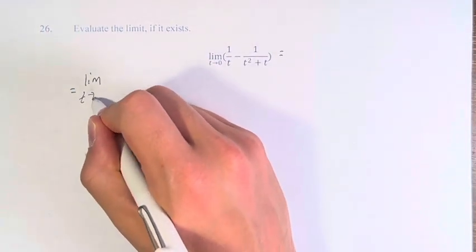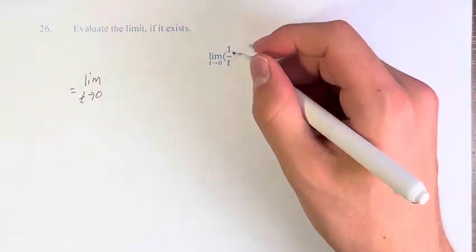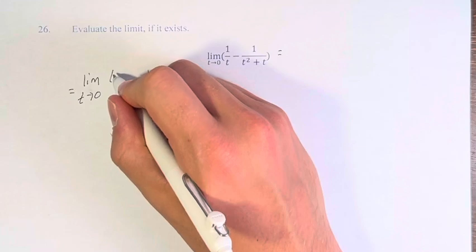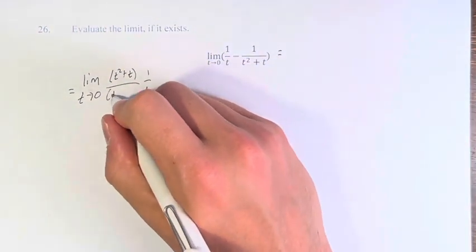So we have the limit as t approaches 0 of 1 over t times t squared plus t over t squared plus t, minus 1 over t squared plus t times t over t.